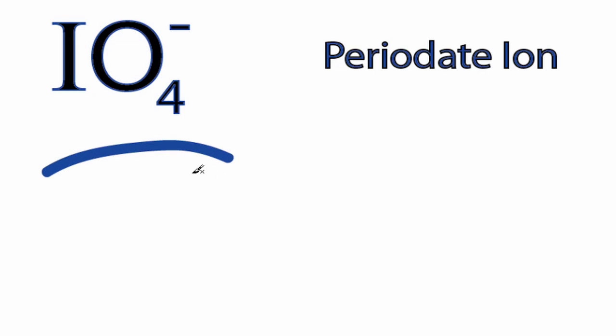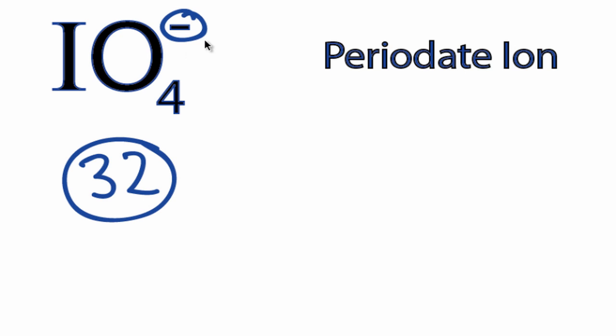This is the IO4- Lewis structure. IO4- has a total of 32 valence electrons, and that includes this extra valence electron up here.